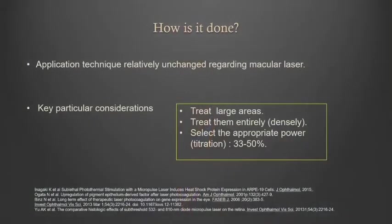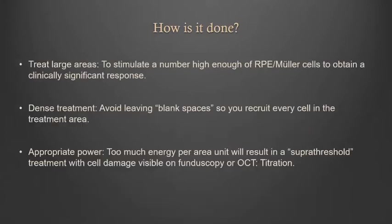First of all, just a few words about how we do it. For anyone used to performing conventional macular laser, the learning curve is relatively flat, but there are particular considerations which make all the sense, taking into account what Victor told us. First, we have to treat a large area. We are not burning a microaneurysm — we are stimulating a bunch of RPE and indirectly Müller cells to produce a therapeutically interesting response. Since the potential of a single cell is very little, we need a lot of them working for us, so we need a large area.